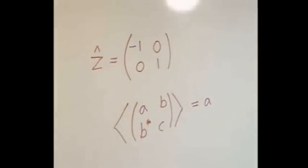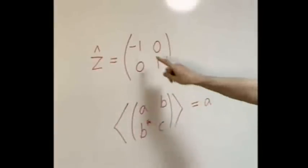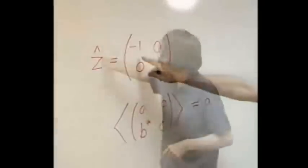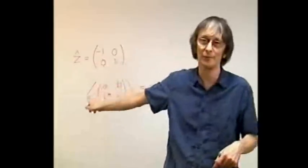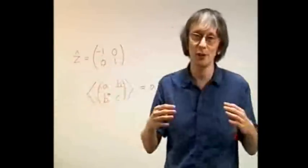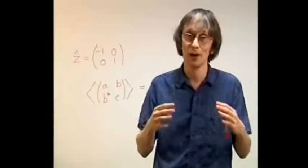So, for instance, if we repeated the whole experiment many times, repeated it including the initial preparation and everything, then the average value of all the outcomes would be minus 1. Okay, but look at the spectrum of Z. It only contains the values minus 1 and 1, so each individual outcome must be one of those two values.